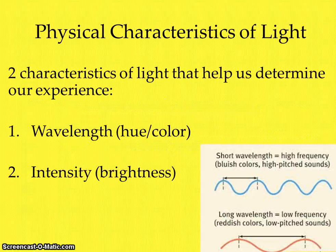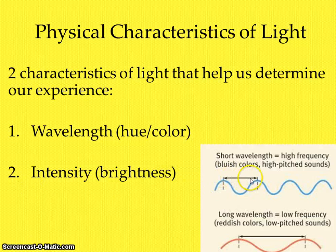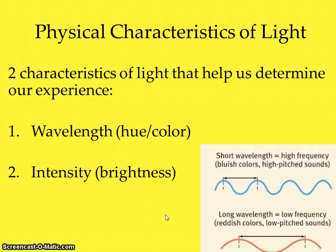The physical characteristics of light that help determine our experience of color and brightness depend on the wavelength and the intensity. The wavelength is the distance from one wave peak to another, like you see in the first diagram. The wavelength helps determine the color or hue, like blue or green, whereas the intensity is the amount of energy in the light waves, determined by the height of the wave, and that is what helps us determine brightness.